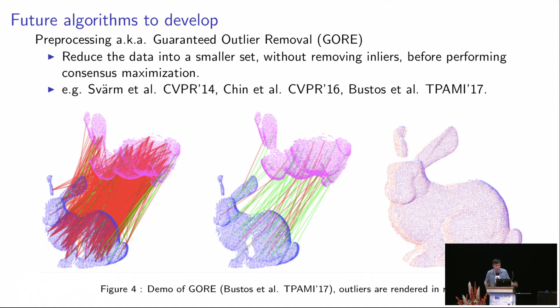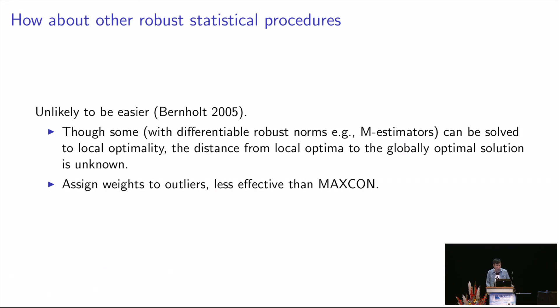Sorry, just very quickly. Of course, we can also do some other things in the future. For example, to perform guaranteed outlier removal by reducing the data into a smaller set without removing inliers before performing consensus maximization. This will reduce the input size significantly for global optimal algorithms. There are also already some previous works that show reliable results. I think this direction is also good to pursue in the future.